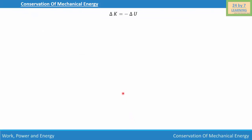Let's simplify further. We write ΔK as K2 - K1, where K2 is the final kinetic energy and K1 is the initial kinetic energy. That equals negative of (U2 - U1), where U2 is the final potential energy and U1 is the initial potential energy.